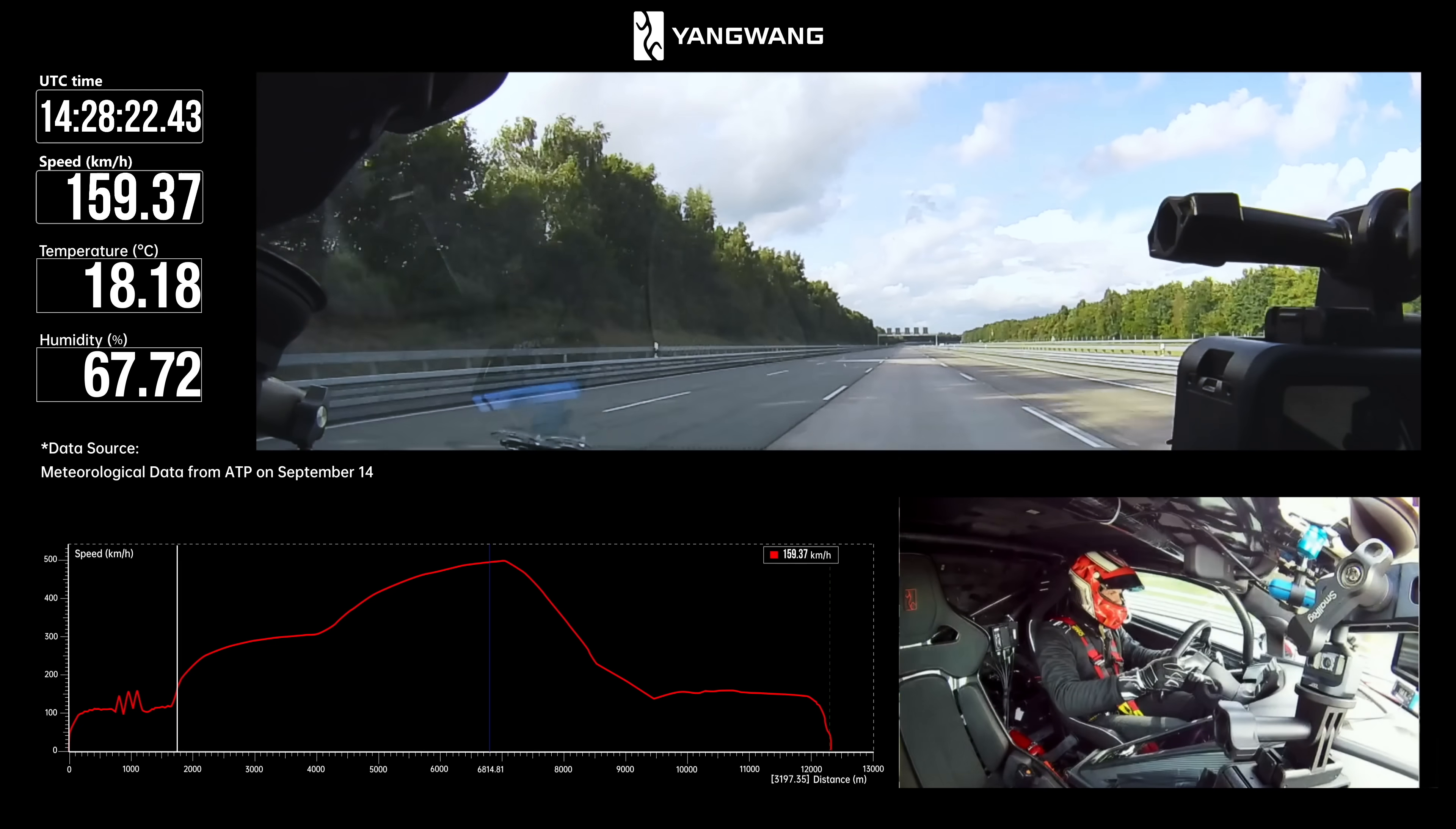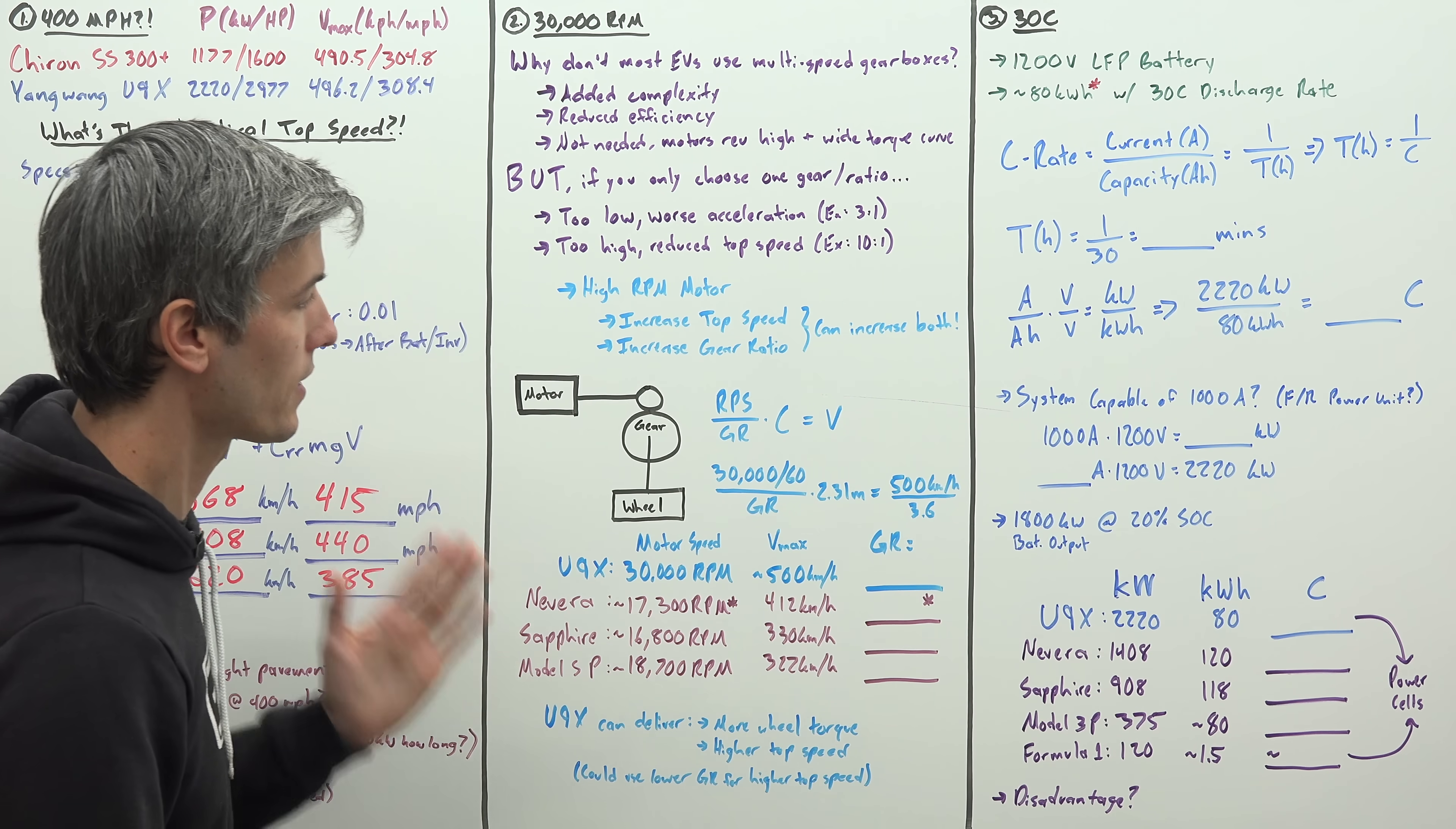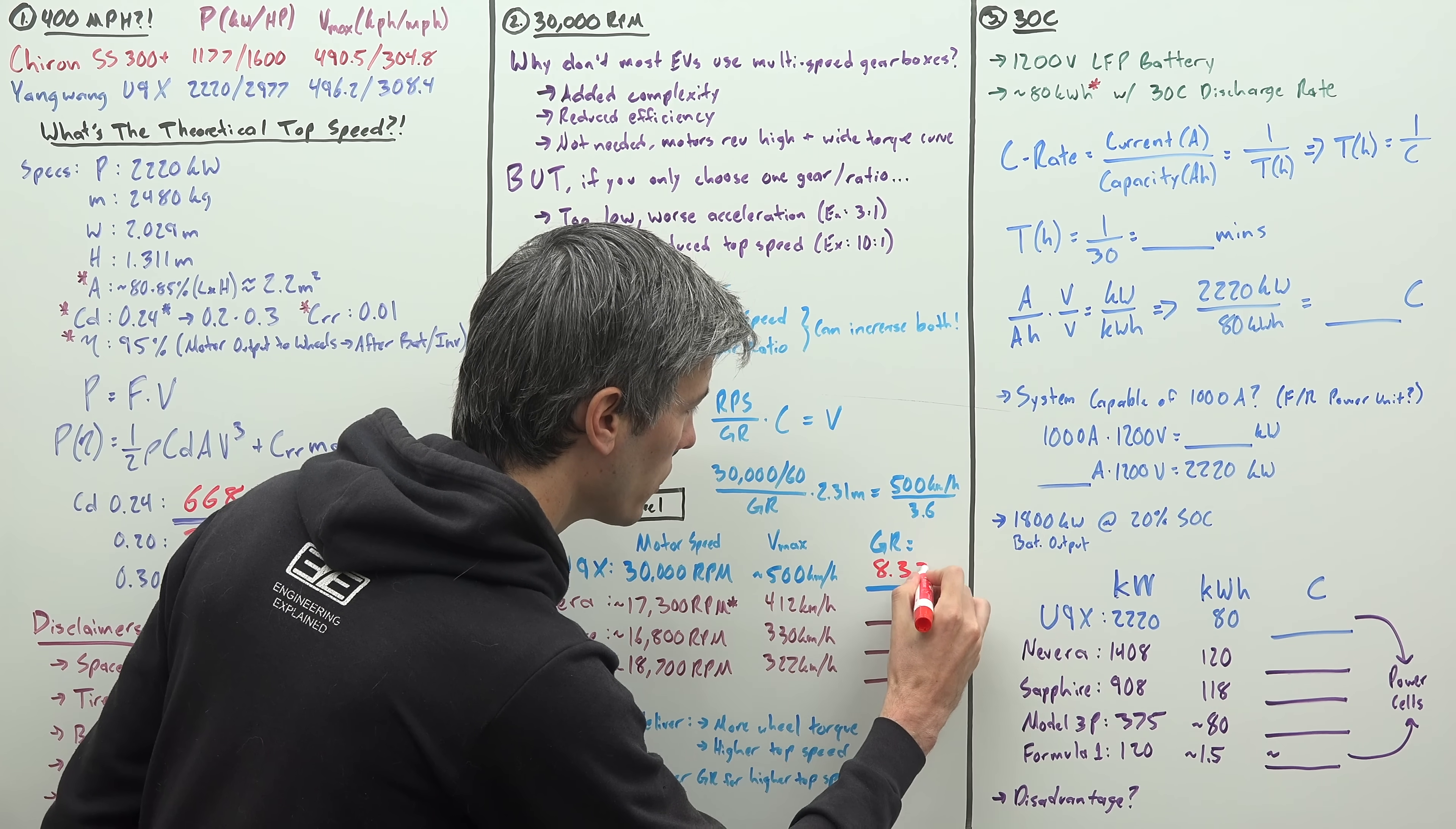Now, we don't know what gear ratio the U9X is using. However, if you take a motor speed, and you divide it by the gear ratio that's going out to the wheels, and then you multiply that by the circumference of your tires, you can get your vehicle's velocity. Now, let's just say the U9X hits its top speed at that 30,000 rpm top motor speed, and let's say the top actual speed is geared at 500 kilometers per hour. So then we can calculate a gear ratio based on the motor speed and the maximum velocity to be 8.32.